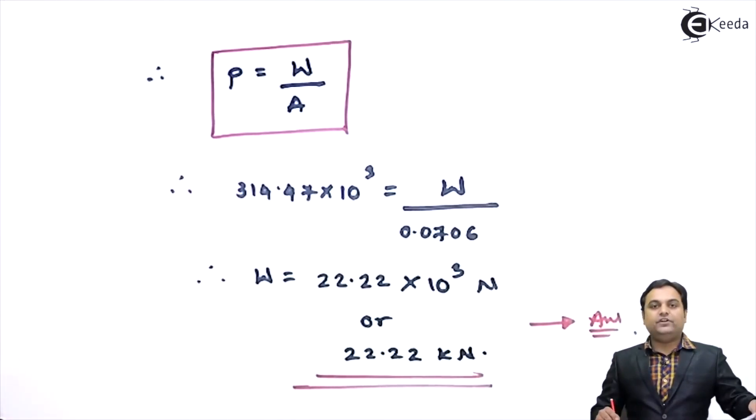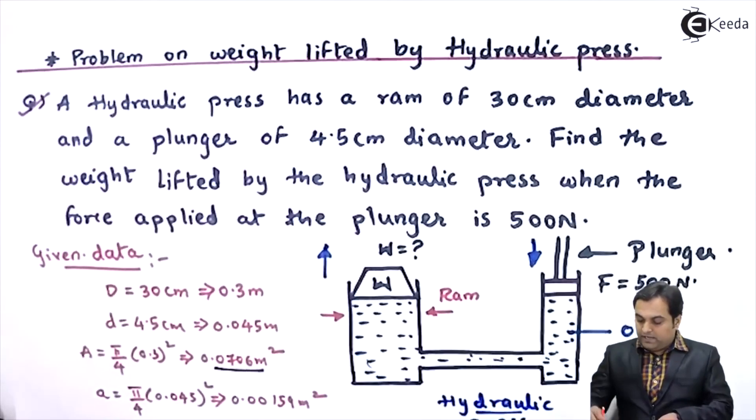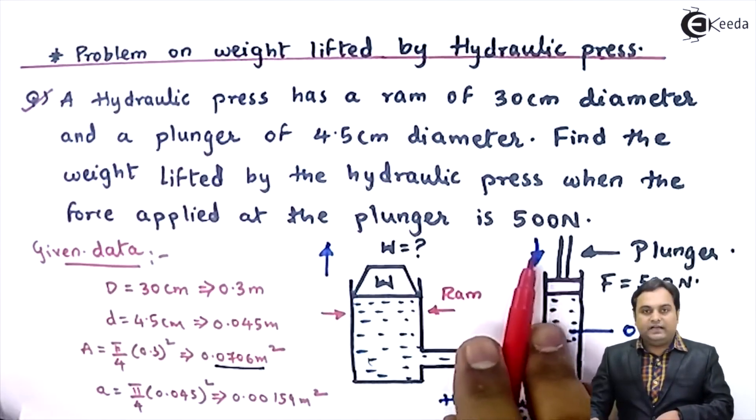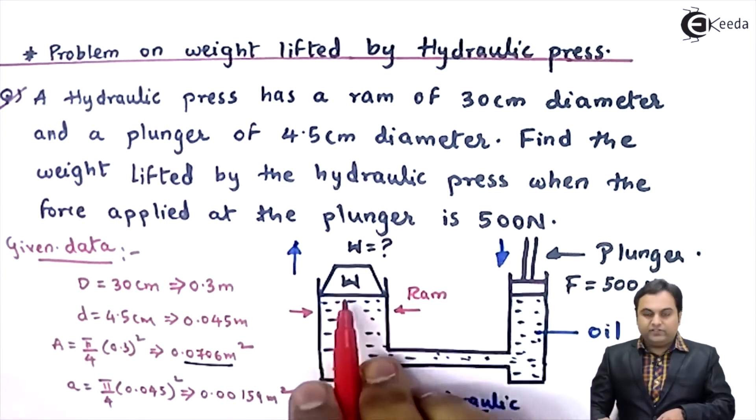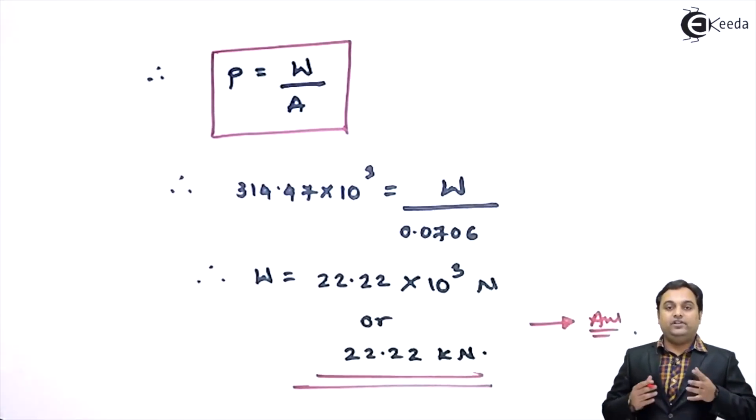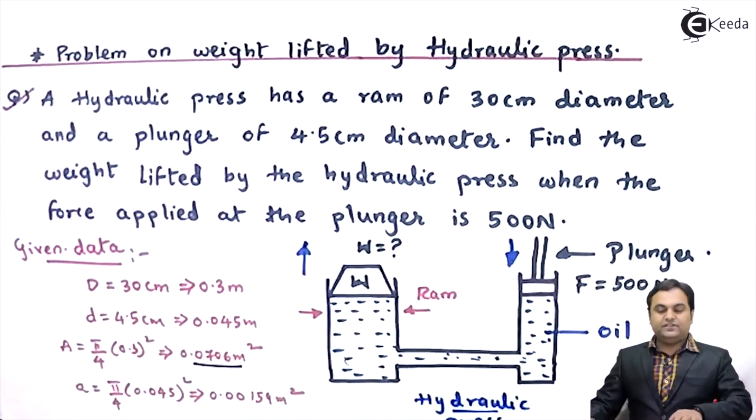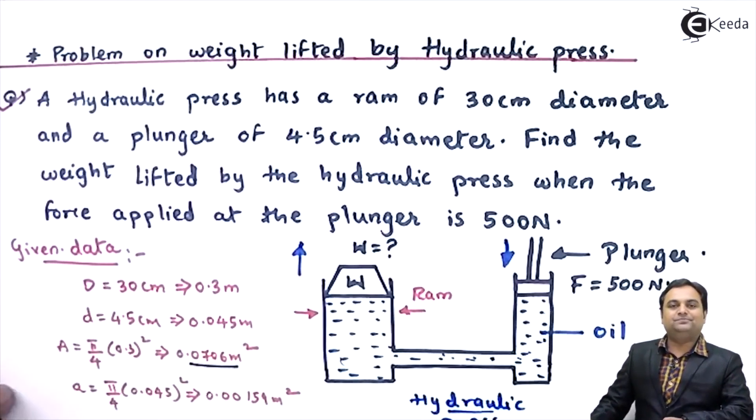So in short, here in this video we have seen the problem of hydraulic press, where by applying 500 newton at the plunger, we are lifting a load of 22.22 kilonewton. So hydraulic press is used to lift heavy loads by applying comparatively less efforts, and with this we complete the problem.